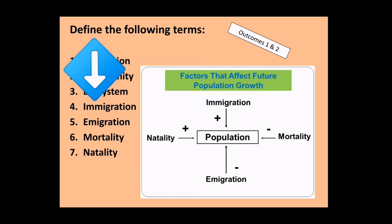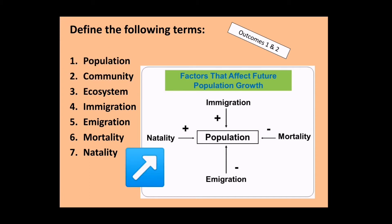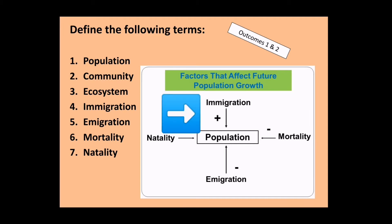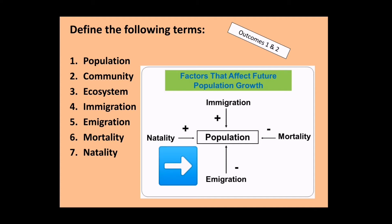The size of a population, or the amount of animals in it, is determined by four things: immigration, emigration, mortality, and natality. Natality is the birth rate — the amount of young produced — and it has a positive effect, increasing population size. Mortality is the death rate, which decreases the population size. Immigration is the moving into an area, and the more animals that move in, the greater the population size becomes. Emigration is the amount of animals that exit an area, and that has a negative effect, reducing population size.